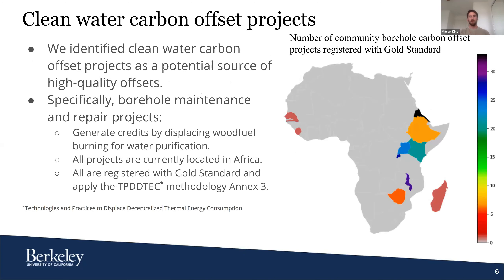We first identified clean water carbon offset projects as a potential source of high-quality offsets, specifically community borehole maintenance and repair projects. We found that over 3.5 million offsets have been issued since 2013, that the number of projects generating credits is large, and that the number of new projects registered is continuing to rise. Community borehole projects generate credits by displacing wood fuel burning, which is used for water purification when there is no source of clean water in the community. All projects are currently located in Africa and registered with Gold Standard, applying the Technologies and Practices to Displace Decentralized Thermal Energy Consumption methodology — the TPDDTEC methodology — which I'll just refer to as the methodology going forward.